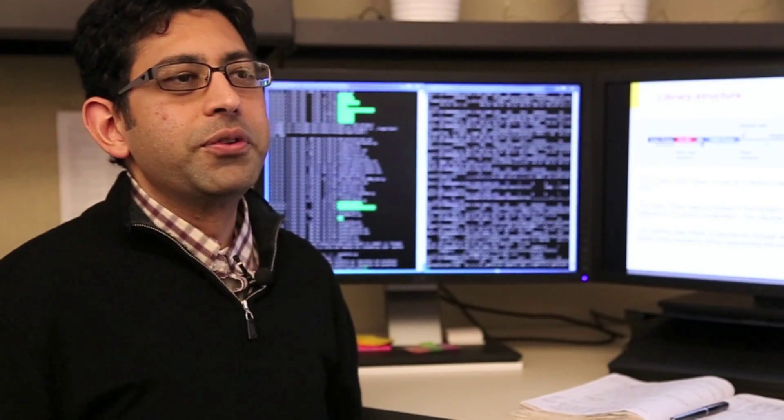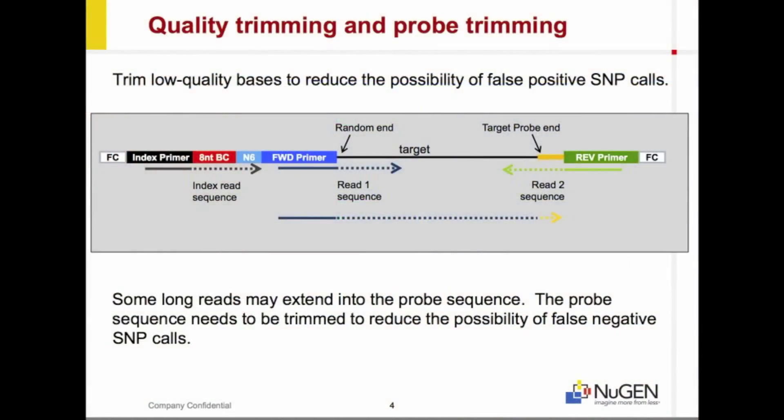Although a reverse read may be necessary for some applications. After demultiplexing, you'll end up with a FASTQ file for each of your barcoded samples.